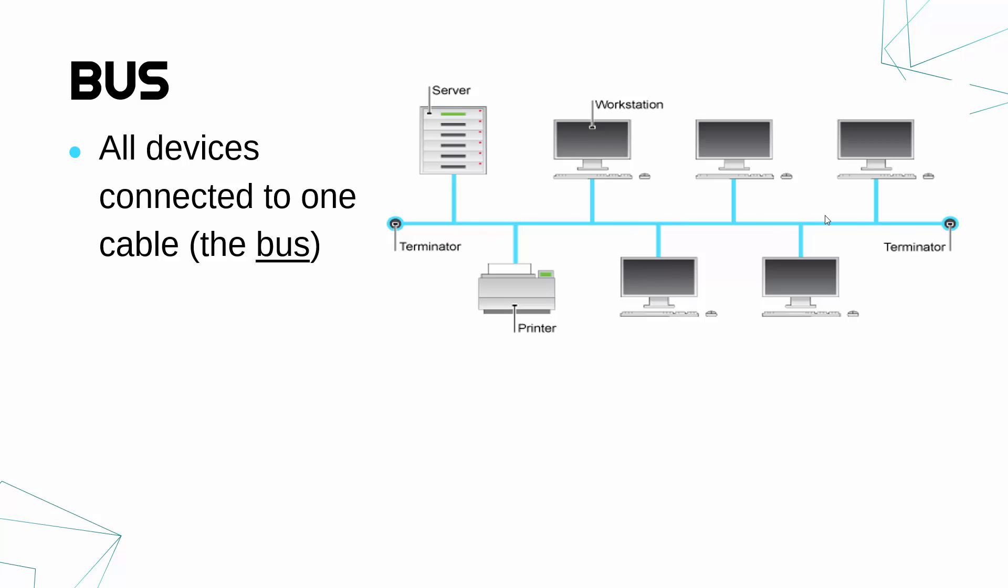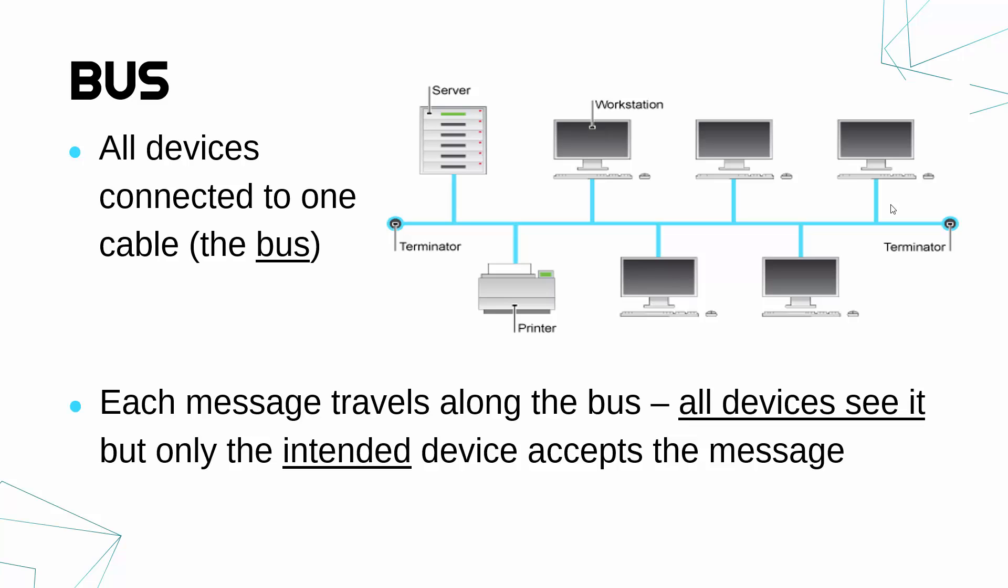Here we've got one big bus in the middle. Each device has a small connection to the big highway, almost. The way this works is each message being sent will travel along the bus. At either end, you've got something called a Terminator. The Terminator stops it bouncing back and forth. The Terminator absorbs the message.